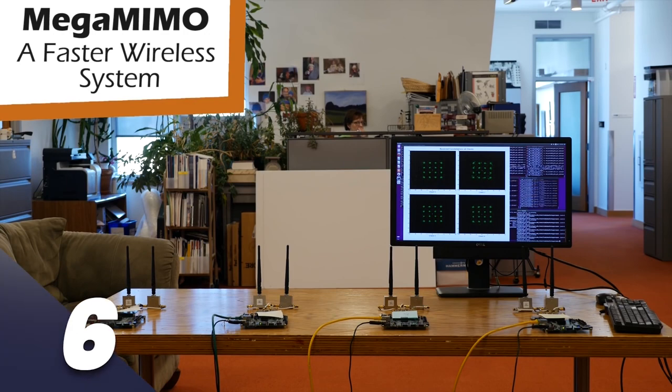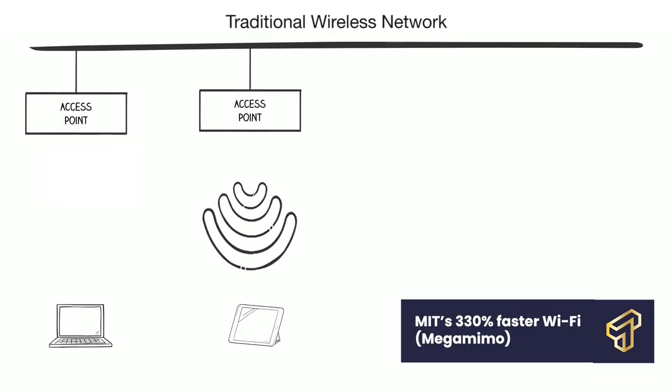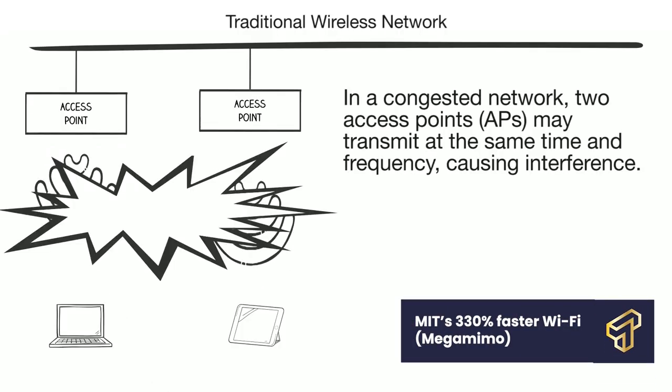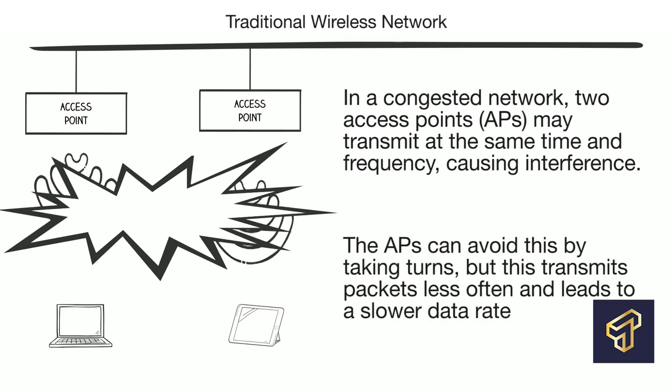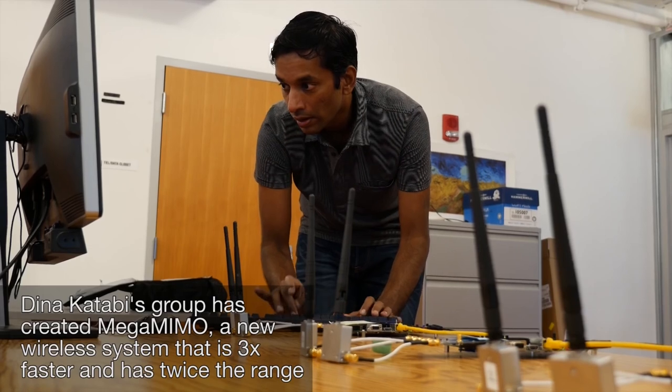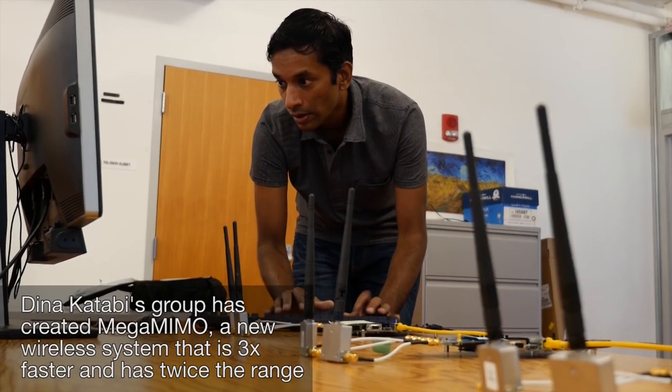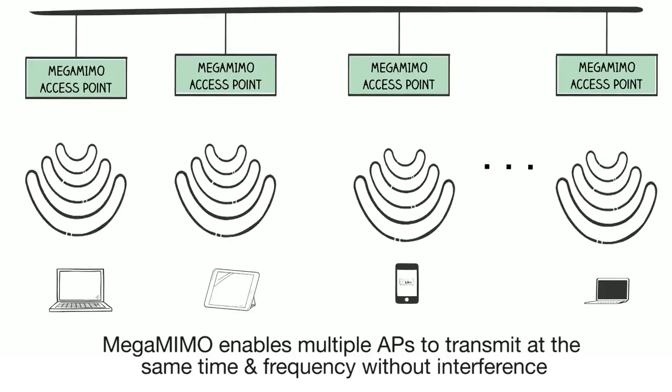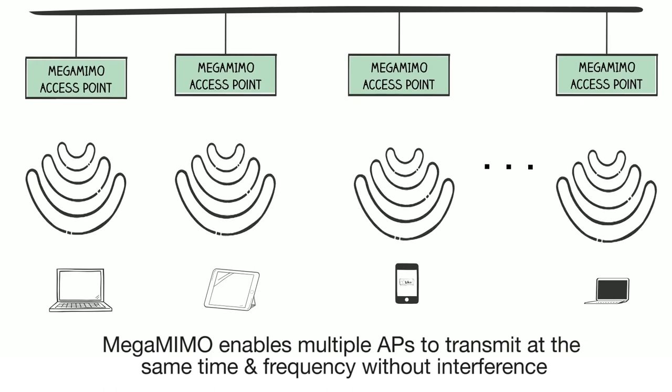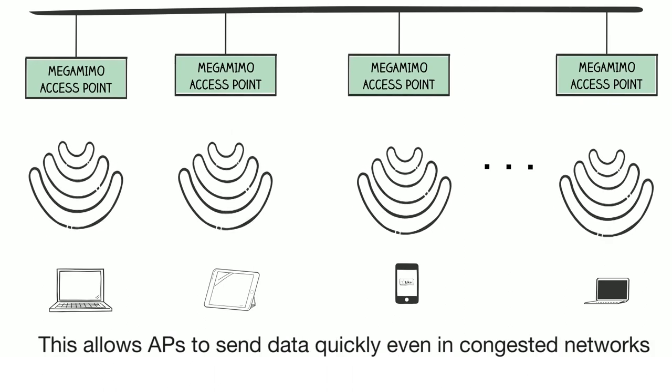Number 6: MIT's 330% Faster Wi-Fi MegaMimo. The MegaMimo is a new Wi-Fi technology that exponentially speeds up data transfer on congested networks. This modern technology can transfer wireless data more than three times faster than the conventional Wi-Fi we use today.